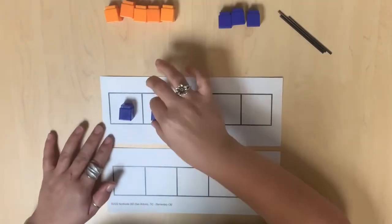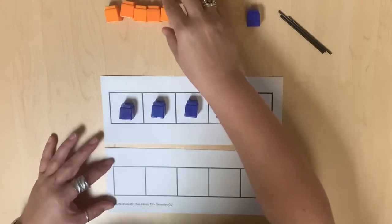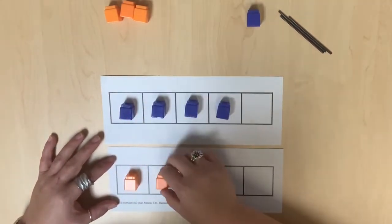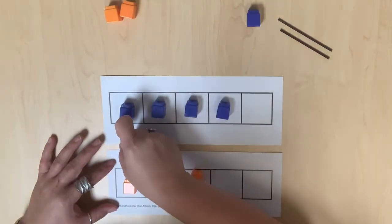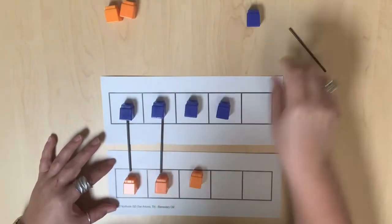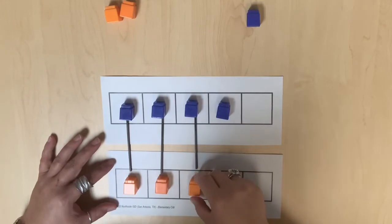Once each set has been created, we can use straws to match one blue cube to one orange cube. Continue this process until no more matches can be made.